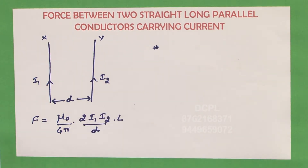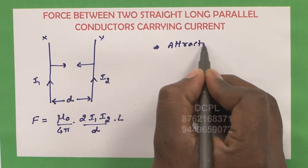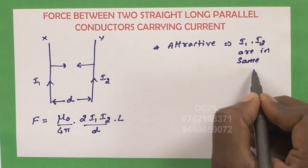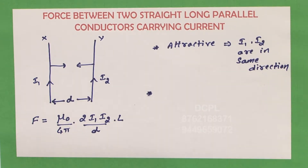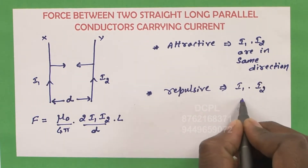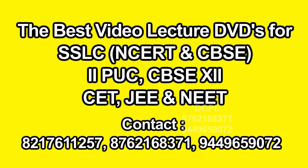Remember, the nature of the force is attractive when the currents I1 and I2 are in the same direction. The nature of the force is repulsive if I1 and I2 are in opposite directions.